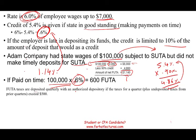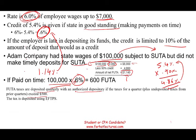FUTA taxes are deposited quarterly with an authorized depository. If the tax for a quarter — usually put in a bank account — plus undeposited taxes from the prior quarter exceeds $500, then you can submit your payment via EFTPS.